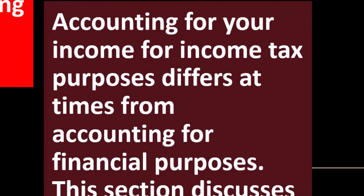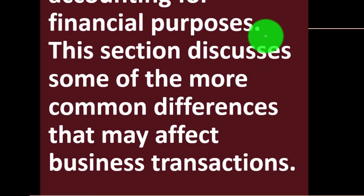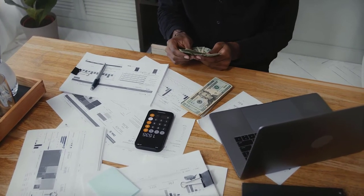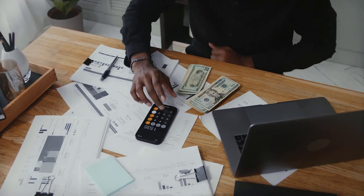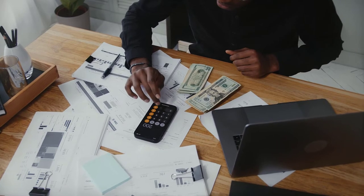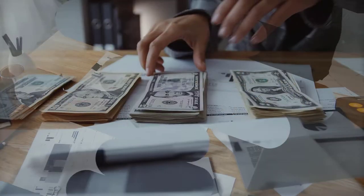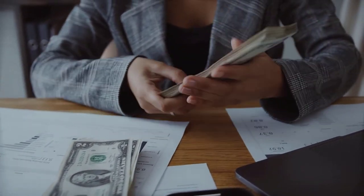Accounting for your income for income tax purposes differs at times from accounting for financial purposes. This can be a little confusing because there are methods of accounting — accrual basis, cash basis, or some kind of hybrid — and no matter what method we choose, we may have additional rules to consider with respect to the tax code versus business accounting.